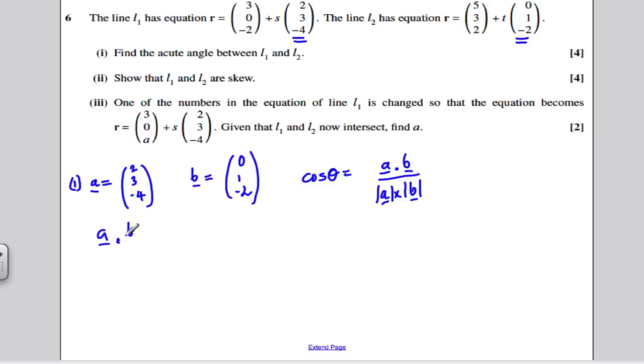Right, A dot B, simple. A dot B. 2 times 0 is 0, 3 times 1 is 3, minus 4 times minus 2 is 8 and you get 11.